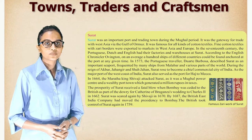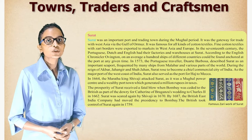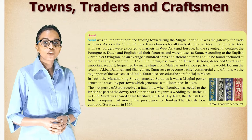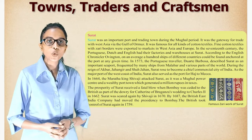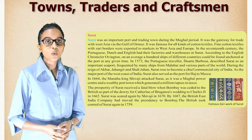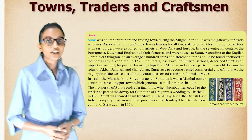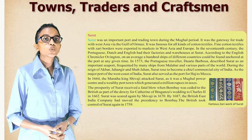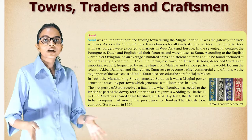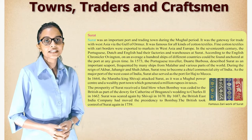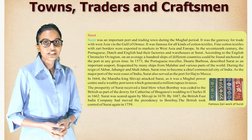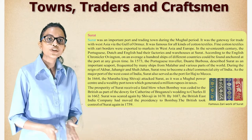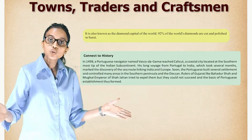In 1573, the Portuguese traveler Duarte Barbosa described Surat as an important seaport frequented by many ships from Malabar and various parts of the world. During the reigns of Akbar, Jahangir, and Shah Jahan, Surat rose to become a chief commercial city of India. As a major port of the west coast, Surat also served as a port for Hajj to Mecca. In 1664, the Maratha king Shivaji attacked Surat, as it was a Mughal power center and a wealthy port town. Surat was sacked again by Shivaji in 1670. By 1687, the British East India Company had moved its presidency to Bombay.